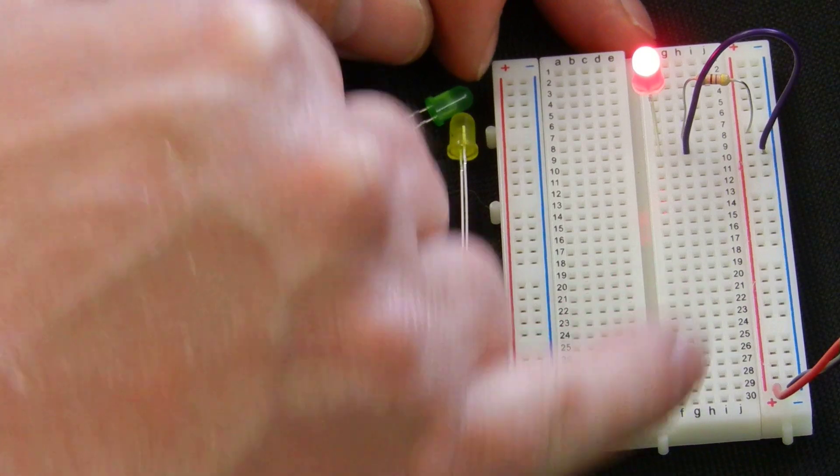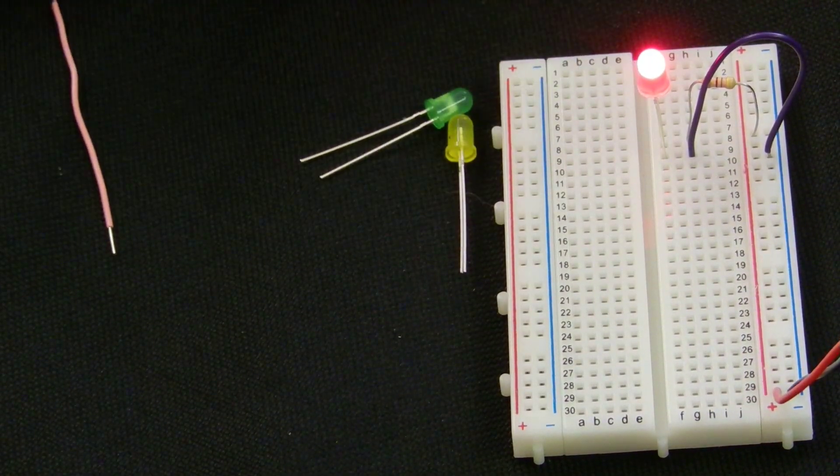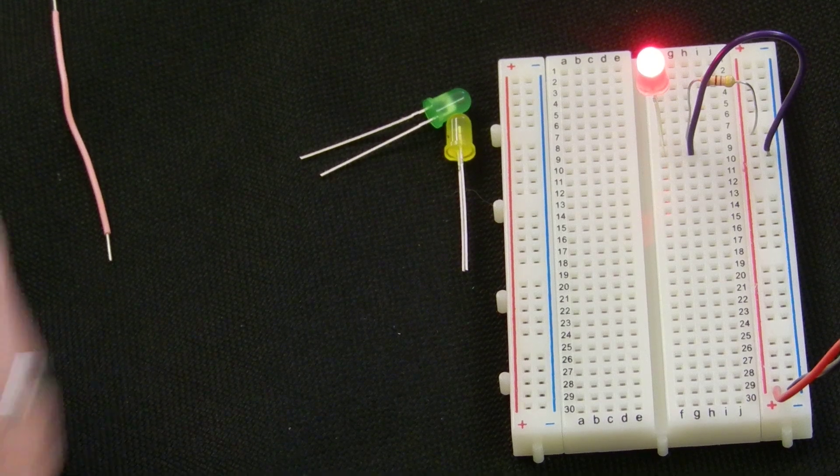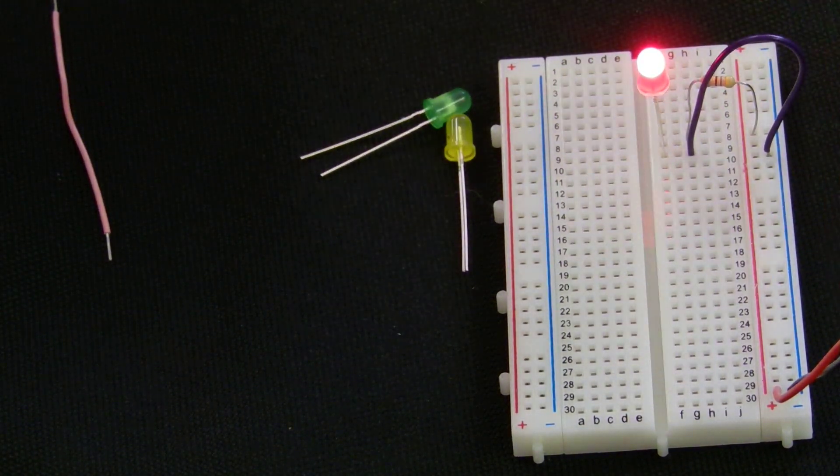The power is coming from the battery, up the plus, through the resistor which in this case is 470 ohms, through the LED, back through the purple link and down to the negative.